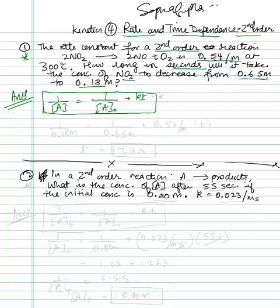And so our final concentration is given to us, 0.18 molar is equal to, the original concentration that is given to us is 0.65 molar, right here, plus KT, and K is 0.54, and that is per molar, and then time is what we are calculating for.